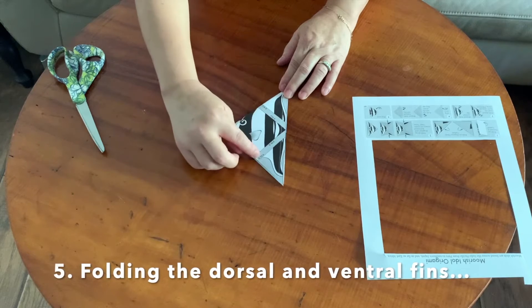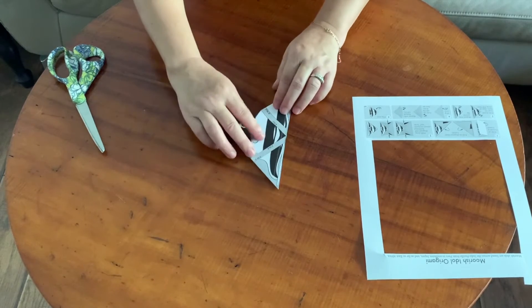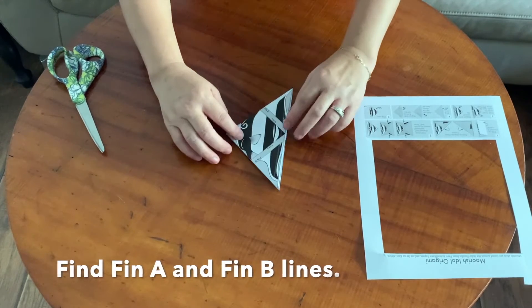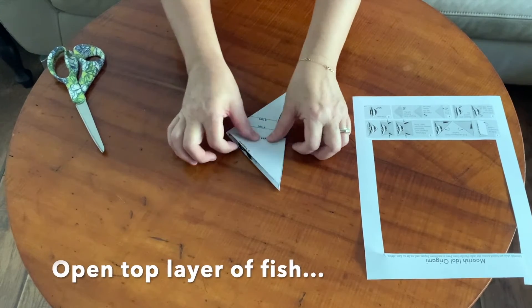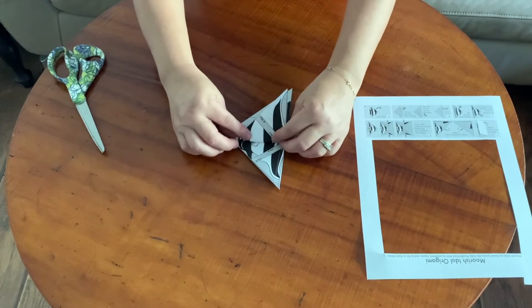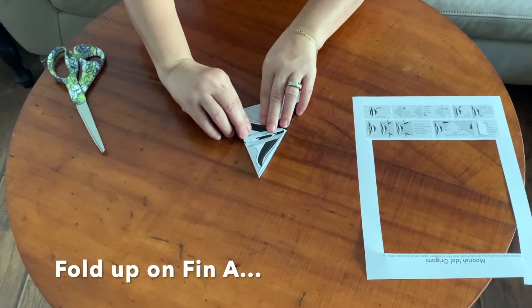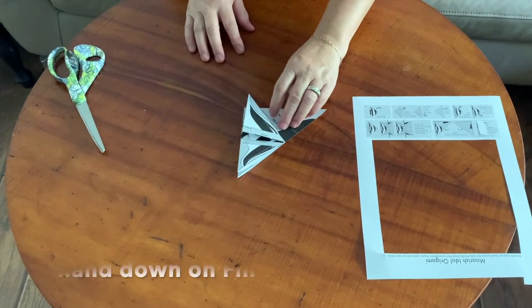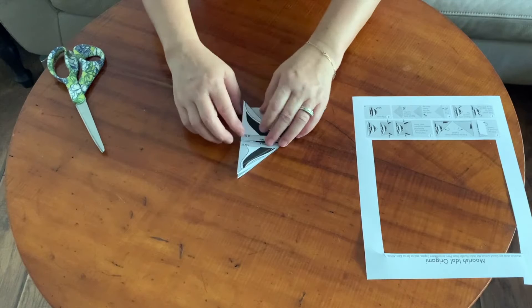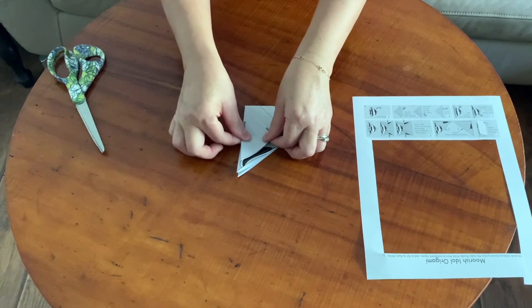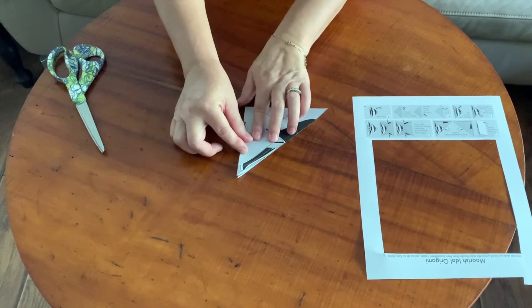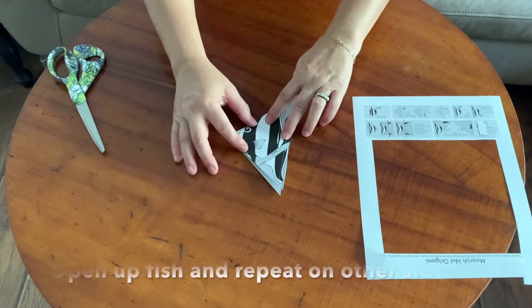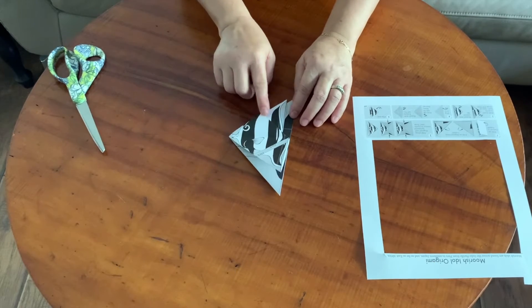Now we're going to create the torso and the ventral fin. Find where it says fin A and fin B. Open up the top portion of your origami and fold up on fin A. Now you're going to fold down on fin B. Just do your best. Now if we open up our origami again, you'll see how you have a nice dorsal fin right here.